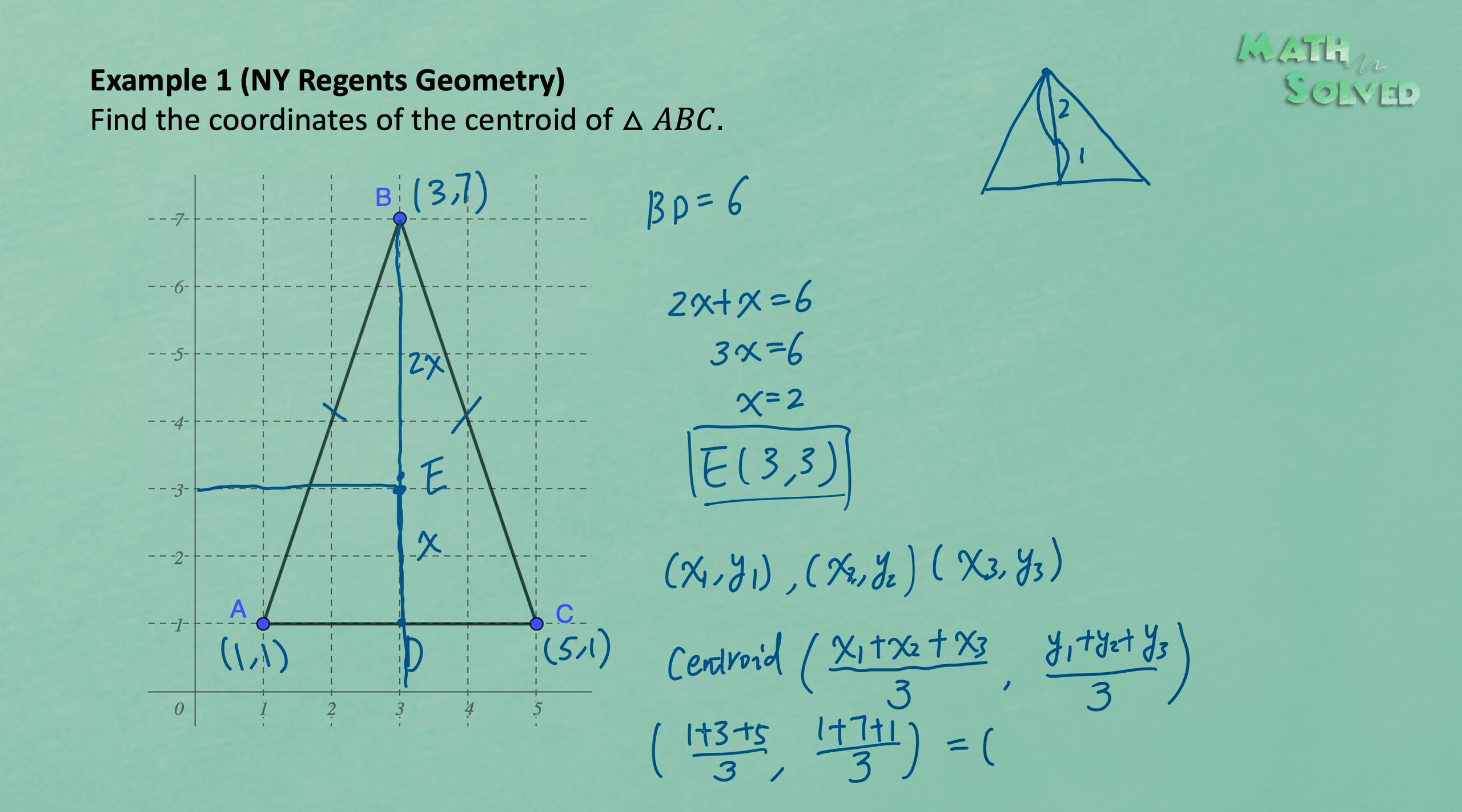And that is equal to 1, 3, 5, that is 9, 9 over 3 is 3. And here, 1 plus 7 plus 1 is 9, and again, 9 over 3 is equal to 3.